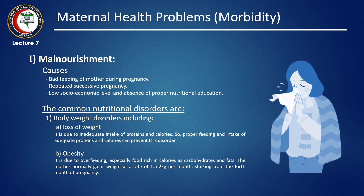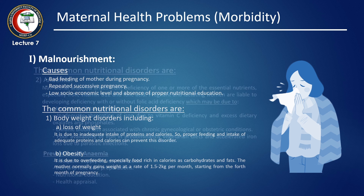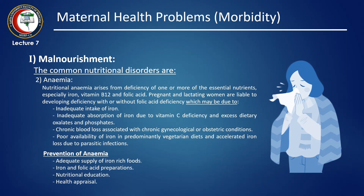We know that the mother normally gains weight at a rate of 1 to 2 kg per month, starting from the 4th month of pregnancy. The second malnourishment disorder includes anemia.